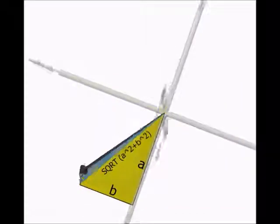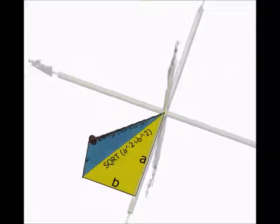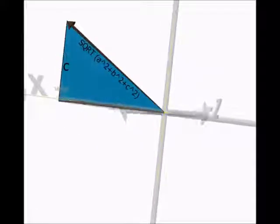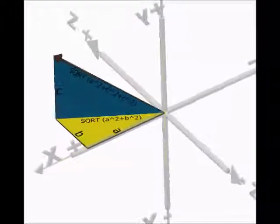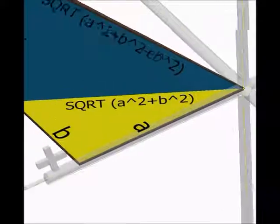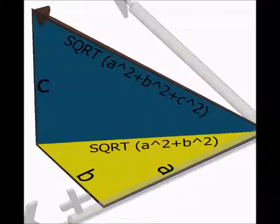To get the length of the vector, look at the triangle on the ground and compare it to the one standing up. Those two share a side, and if you put that together, you end up with square root of a squared plus b squared plus c squared.